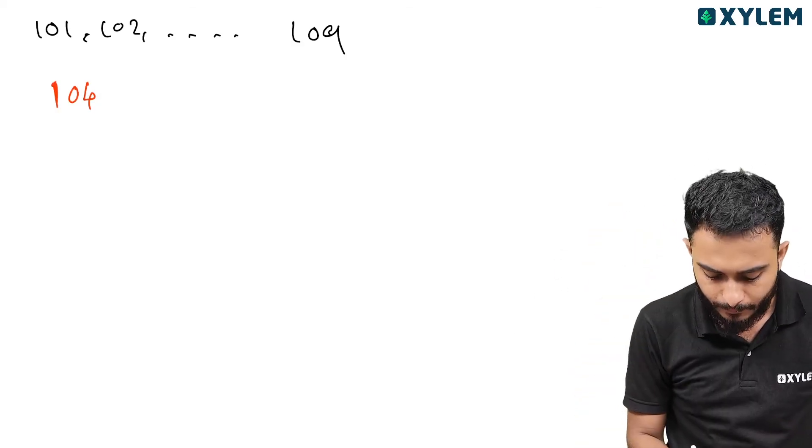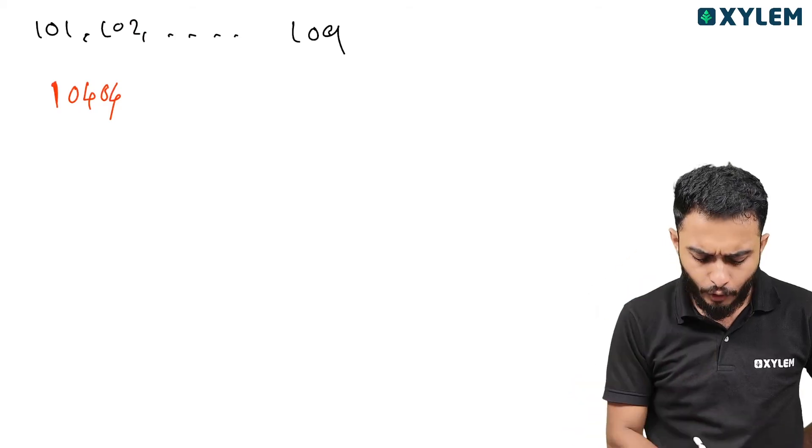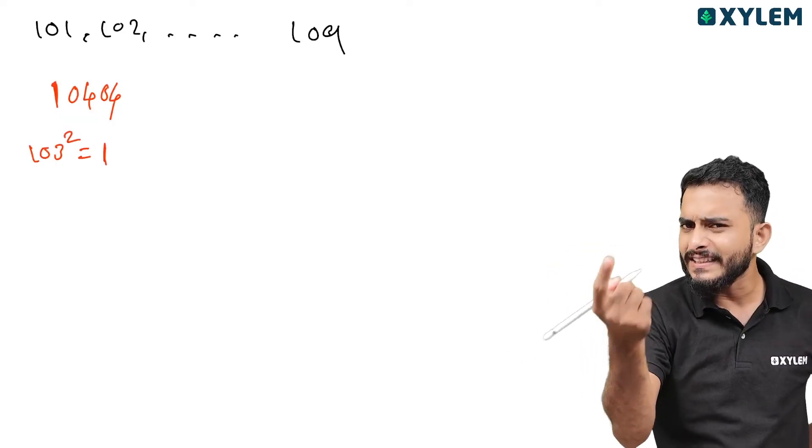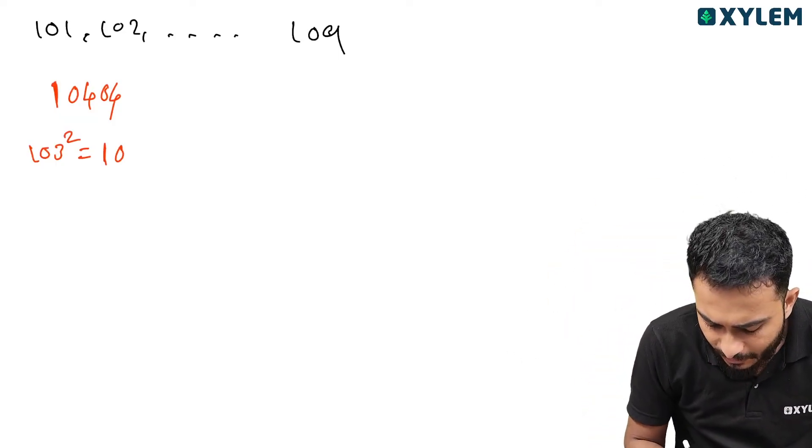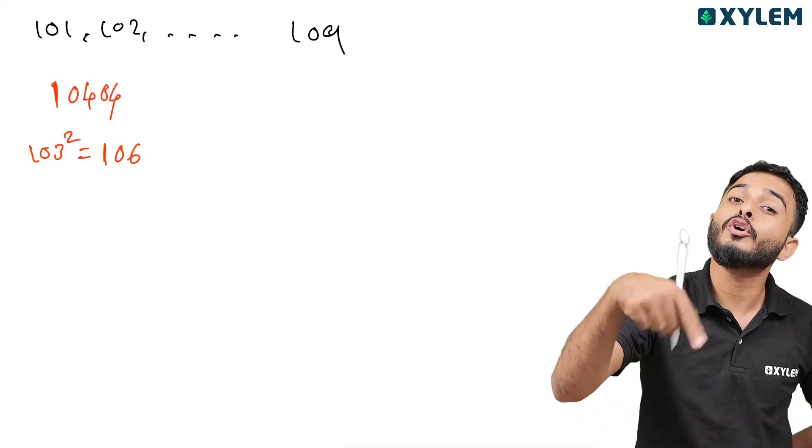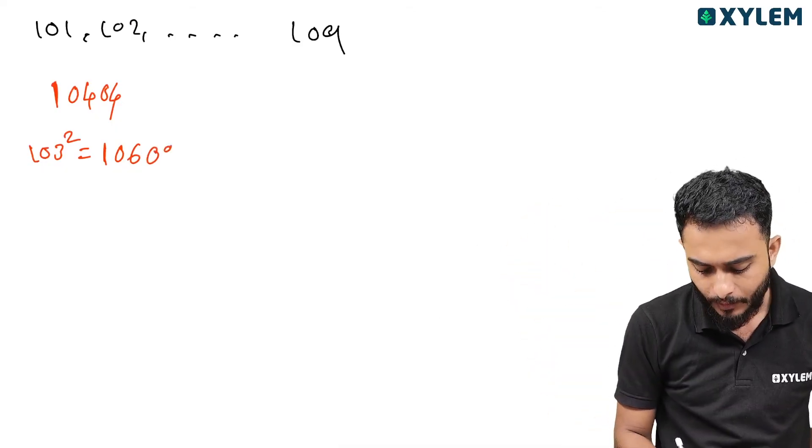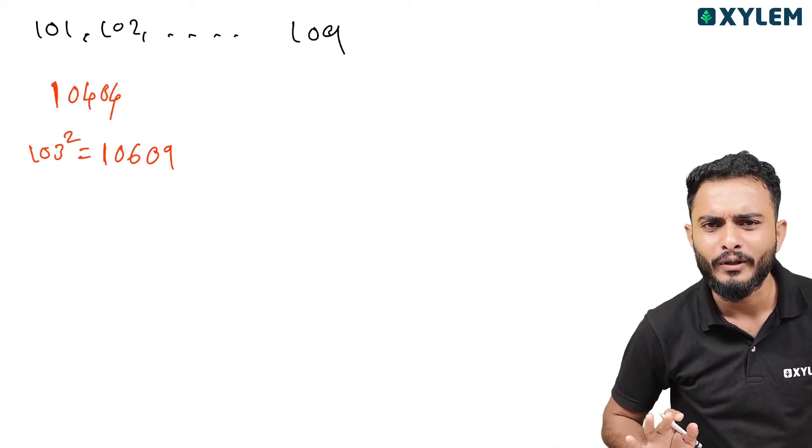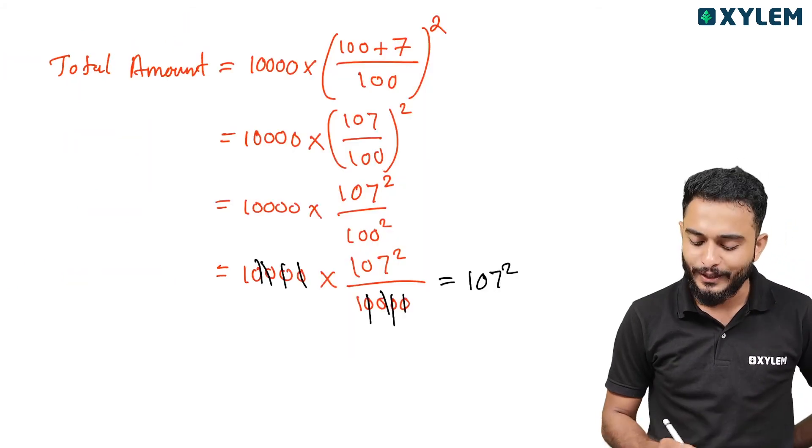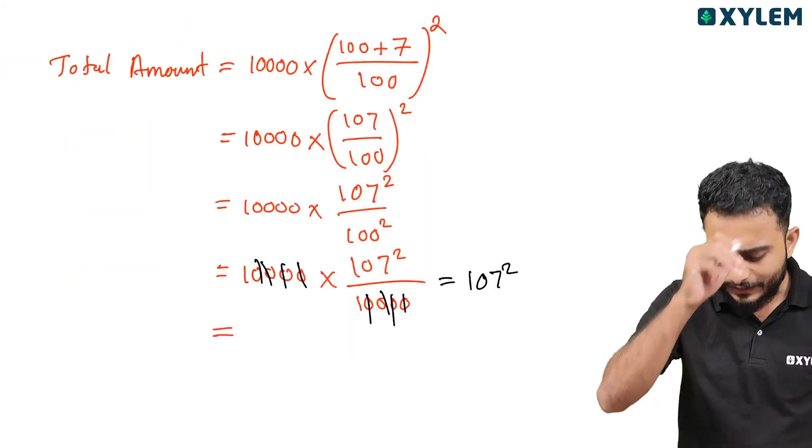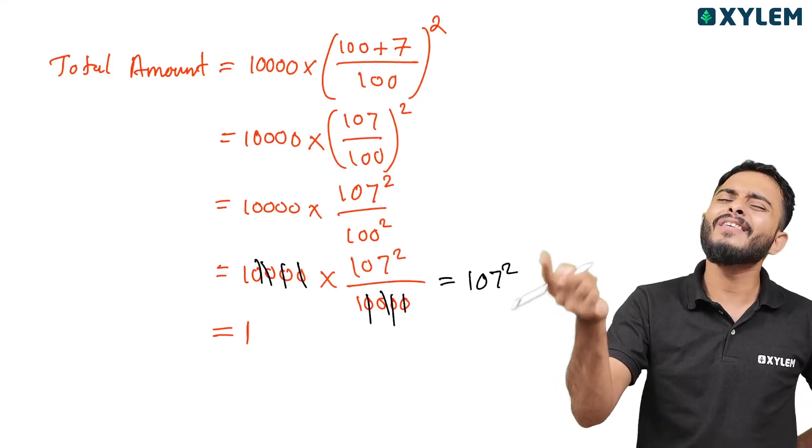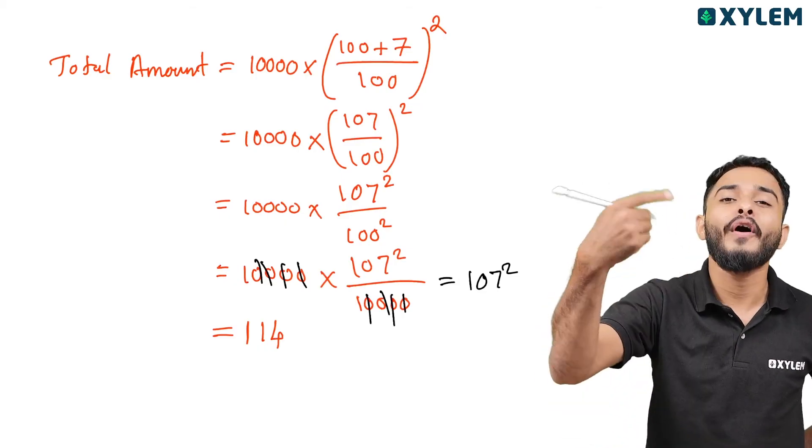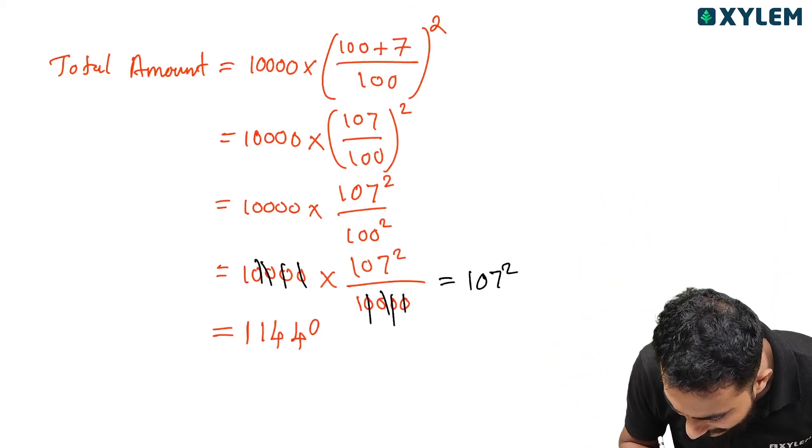Last digit is 7 squared. First 1, then last digit 7, 7 doubled is 14, then 7 squared is 49. Adding these up: 10,000 plus 1,400 plus 49 equals 11,449.